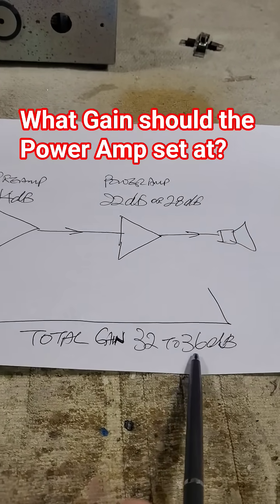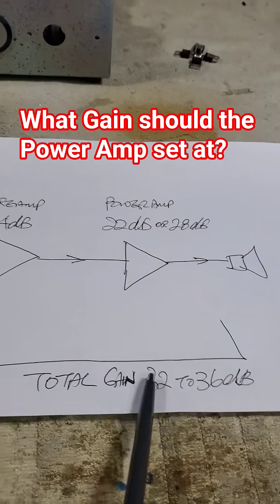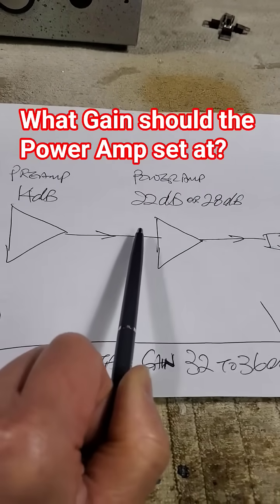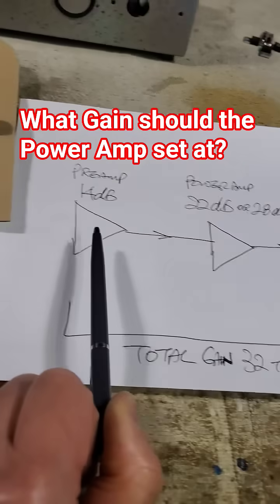This total gain should be lower, but we can't always have the ideal number. But in his case, if I want to fall into this range, it should be set at 22 dB. But the power amp really should have less gain than the preamp,